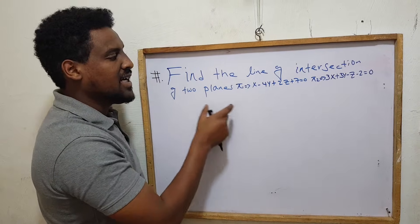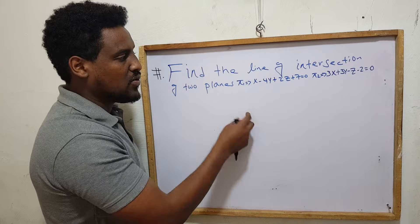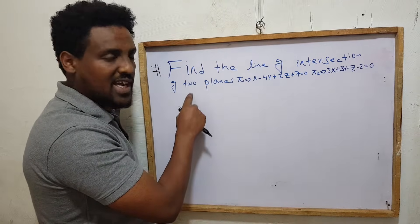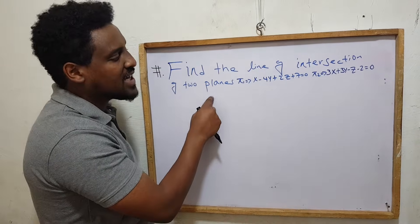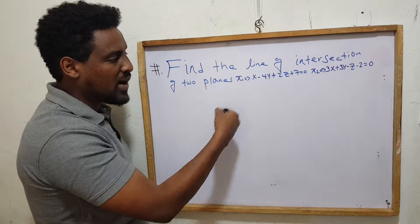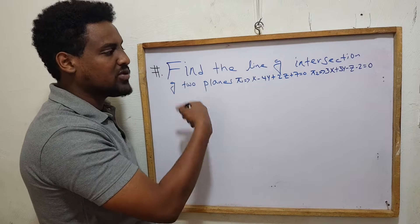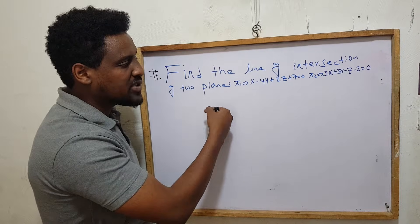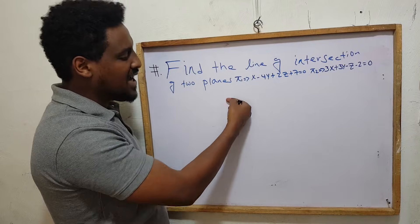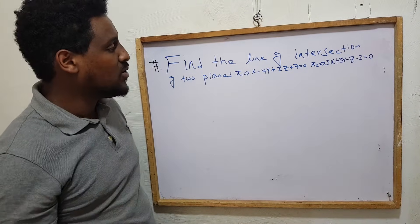So the point is equal to the parallel vector. The parametric form is: x equals x0 plus at, y equals y0 plus bt, z equals z0 plus ct, where x0, y0, z0 is the point. This is the parallel vector to the line.